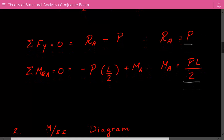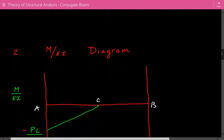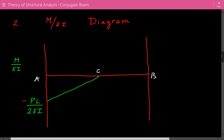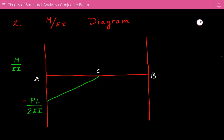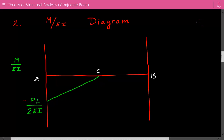Next, we're going to construct the M over EI diagram. At the fixed support, we have a bending moment equal to negative PL over 2, divided by EI. At point C, the location of the concentrated load, the moment goes to 0. From C to B, we have zero moment, so the M over EI diagram is also zero.